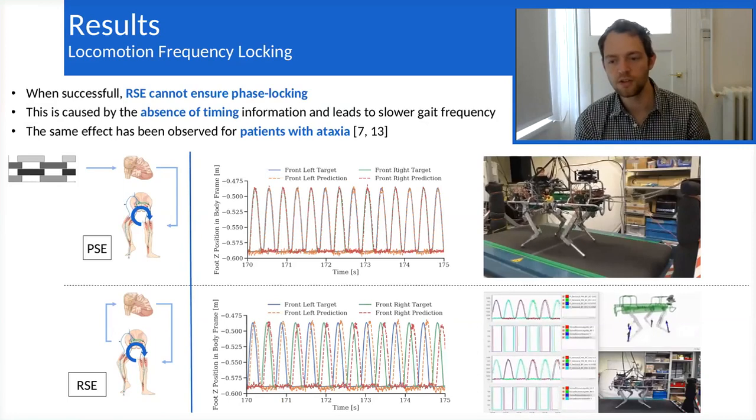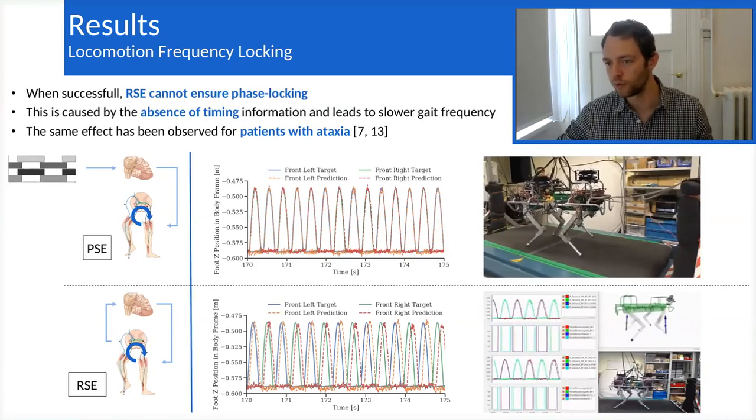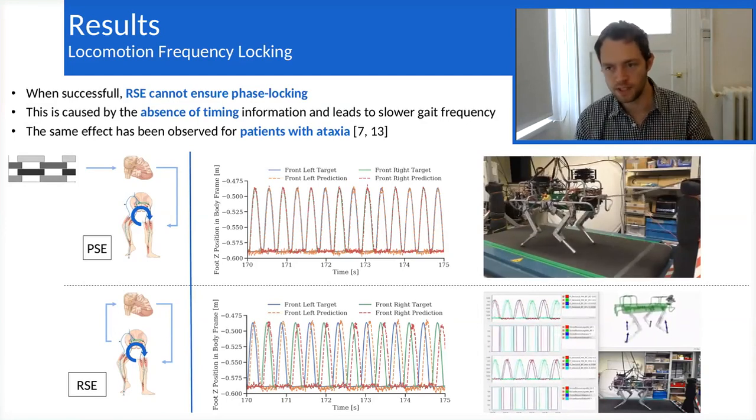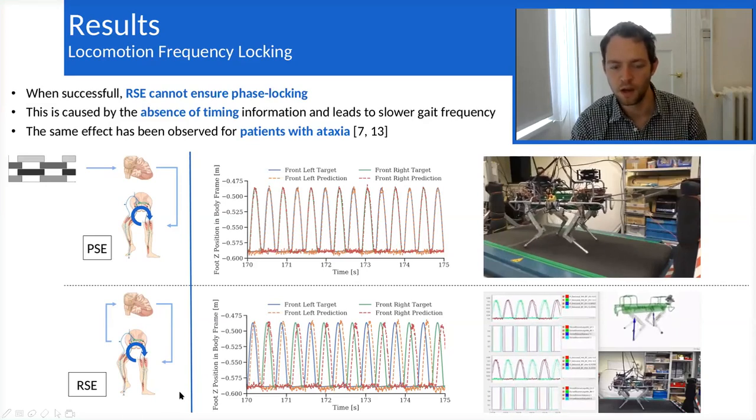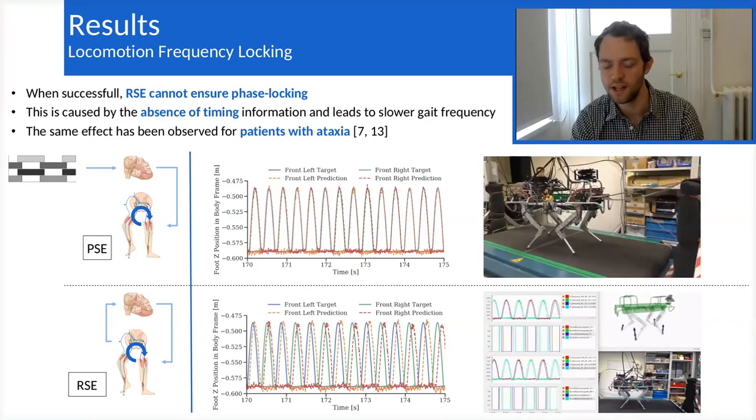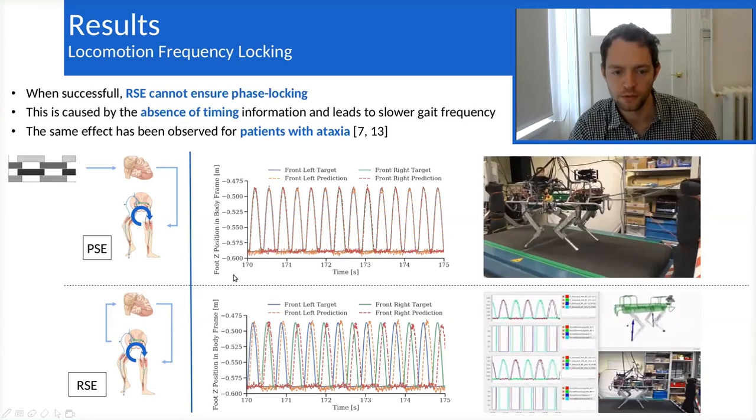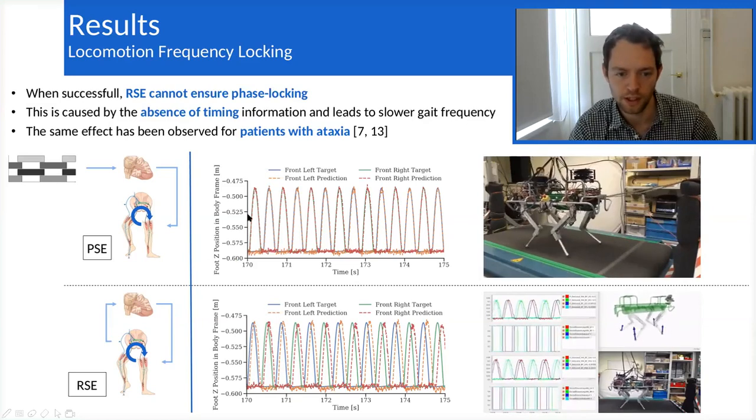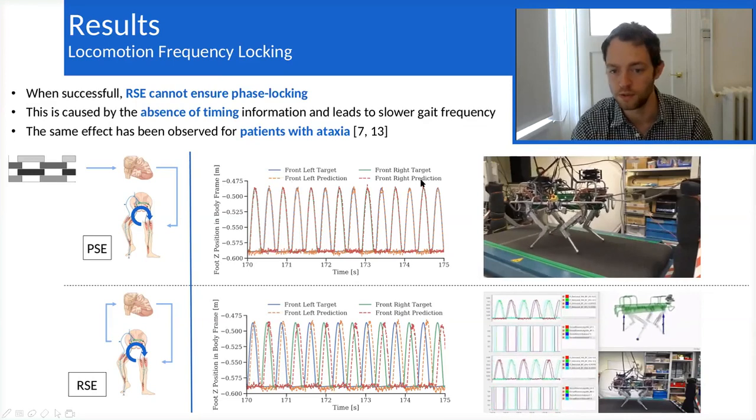In one situation, we observed that the robot could, along the full trial, keep a stable gait with RSE. However, the phase between the target and the prediction signal actually started to diverge. So if we compare to the normal PSE signal, where the target of the foot position is actually the same as the prediction, in this trial that I'm mentioning, we have seen that the phase is actually shifting over long time,